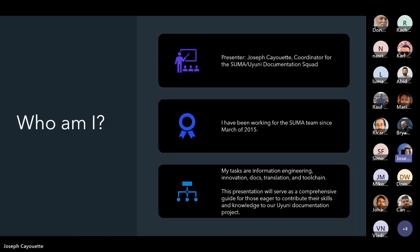My name is Joseph Kewit. I'm the coordinator for the SUMA Uyuni documentation squad. I've been working for the SUMA team since March of 2015. My tasks are information engineering, innovation, docs translation, and of course our toolchain. I hope to give you a good overview of the docs toolchain and what's expected to help contribute.